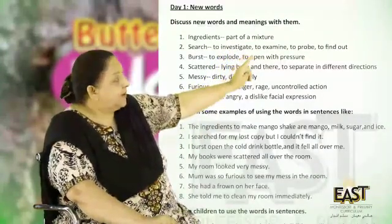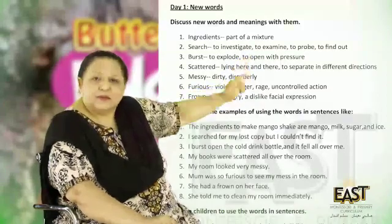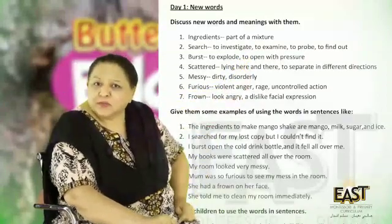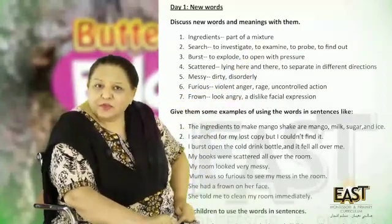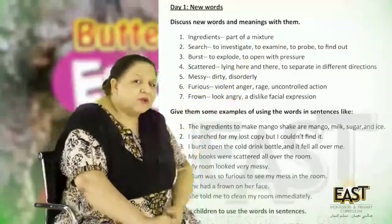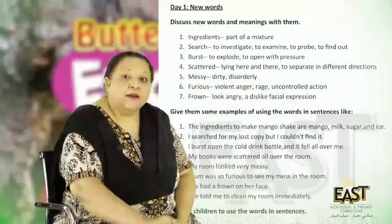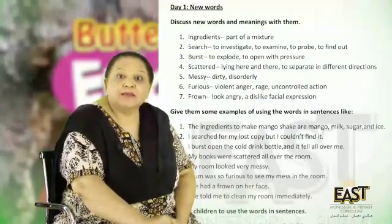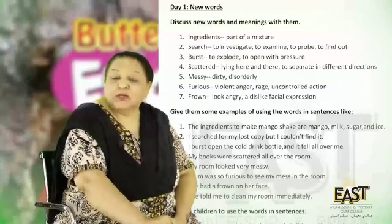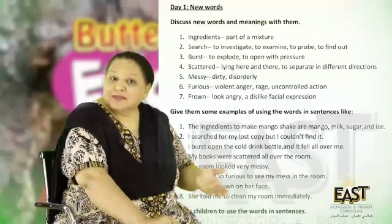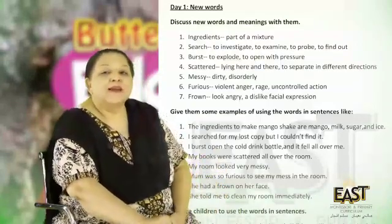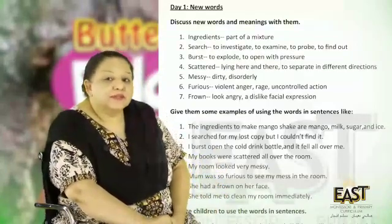Number one: ingredients. Ingredients, ingredients. What are they? What are the ingredients to a cake? Flour, eggs, butter, sugar, essence. Good. What does that mean? Part of a mixture. Well done.